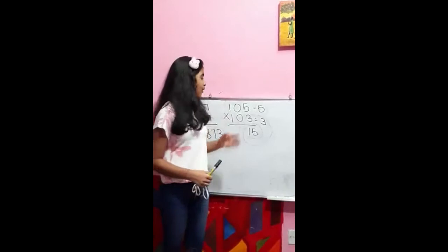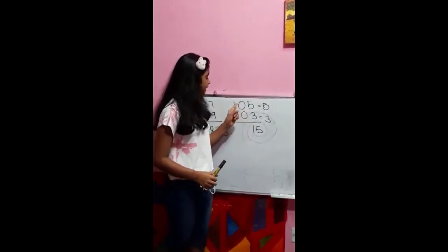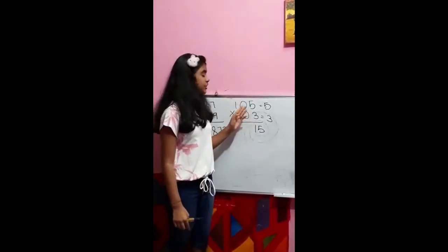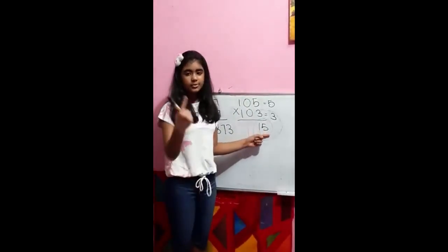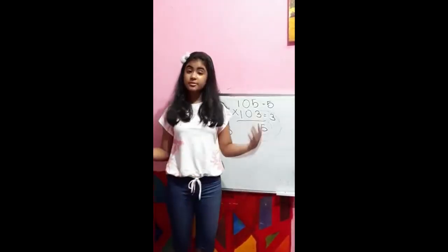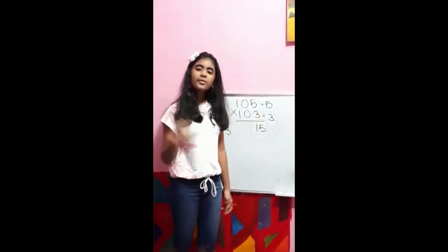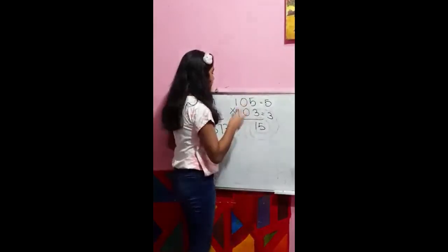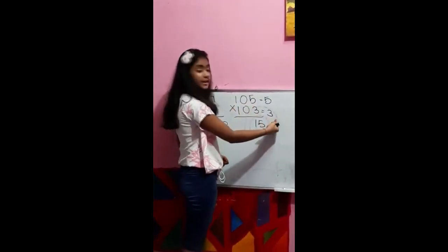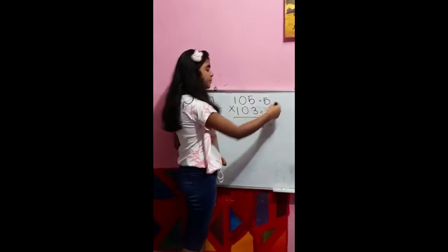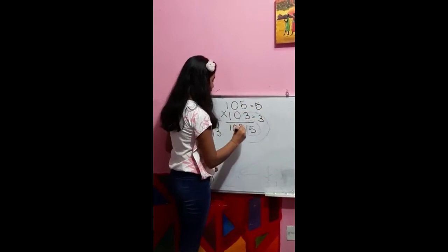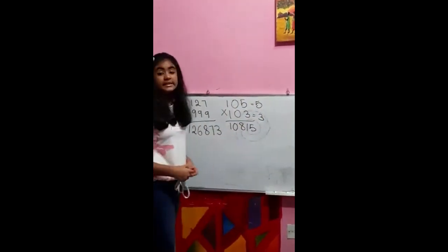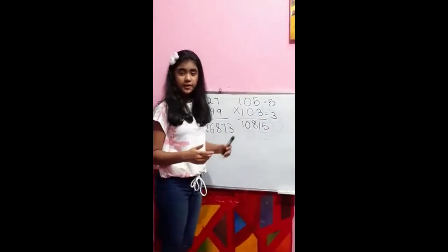A good rule to keep in mind is that when you multiply these numbers, since the base is 100 and it has two zeros, the answer on this side should have only two digits. If it has one digit, add a zero in front. Then, 105 plus 3, or 103 plus 5, gives you 108. Please feel free to cross-verify these answers.